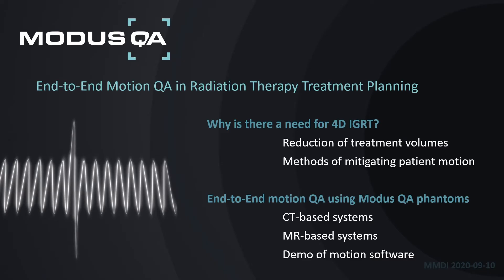In a brief overview of today's talk on end-to-end motion QA in radiation therapy treatment planning, we're going to go over why there is a need for 4D IGRT — image-guided radiation therapy — focused on reduction of treatment volumes and the methods we use to mitigate patient motion. Then I'll dive into how we use our motion QA phantoms to provide end-to-end QA, covering CT-based systems, MRI-based systems, and a demonstration of the motion software.